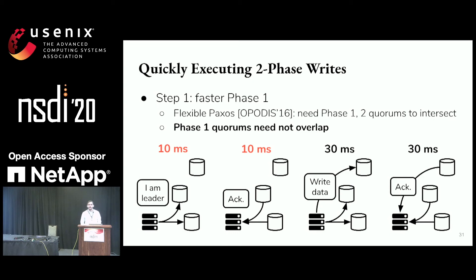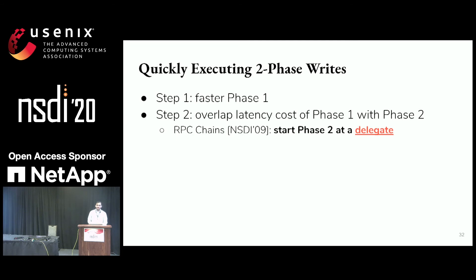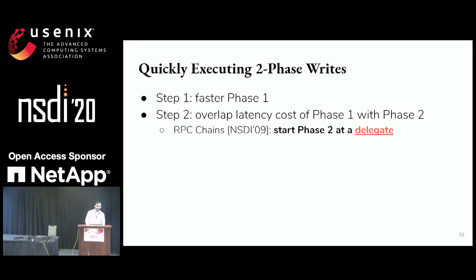The second observation is that the latency cost of executing two phases stems from going from the frontend back to the data sites and then back again. So what if we could keep execution closer to the data sites? This observation has been used before to chain RPCs together and move where execution is done. We use it to execute phase two not at the web server, but at a so-called delegate data site.